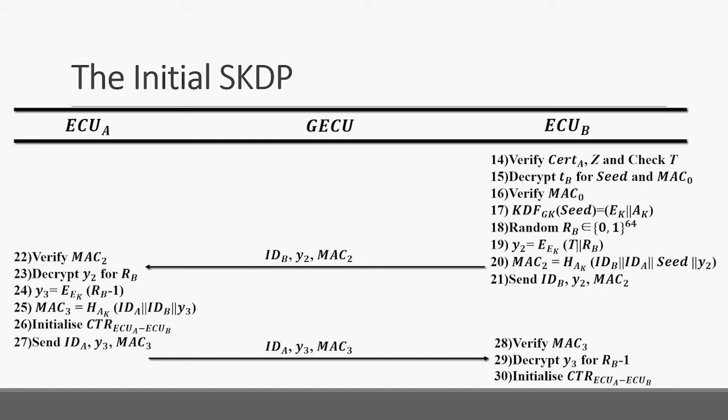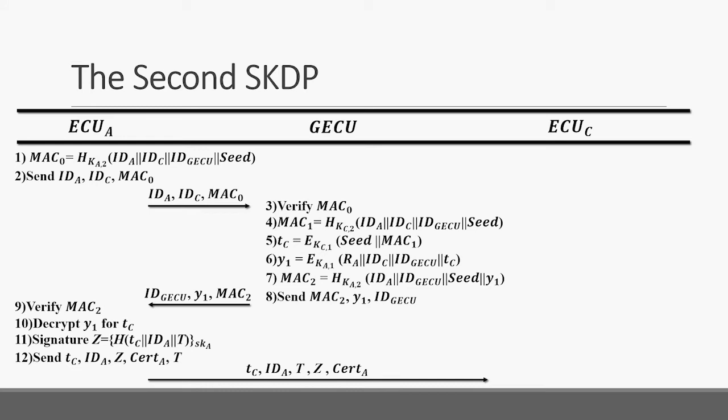There are some remaining steps in the protocol to confirm the session key between ECU A and ECU B, as in the original NSSK. Our main modifications are the application of a signature mechanism for authenticating the identity of ECU A and timestamping to resist replay attacks. The second SKDP we proposed is used for transporting the same session key to other ECUs within the communication group. It has only a small difference from the process of the initial SKDP, so we won't repeat it.